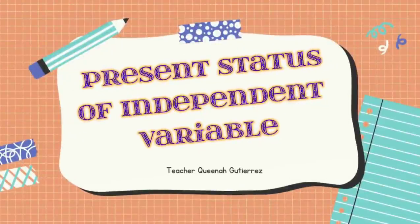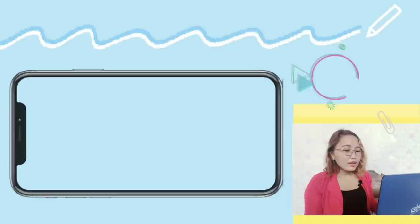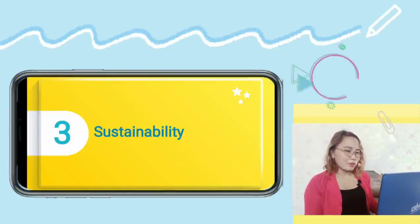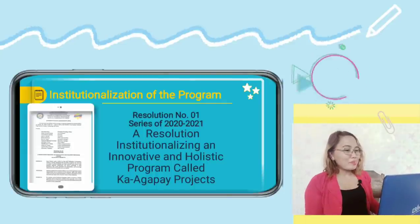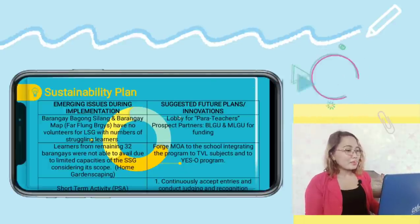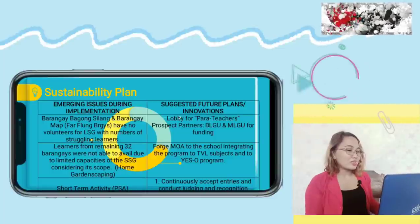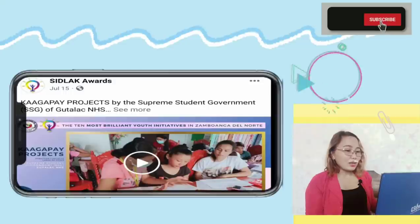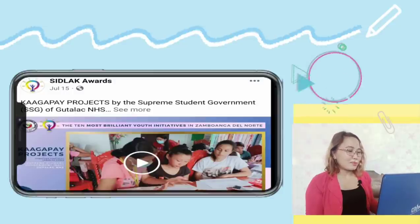Lastly, present the status of your independent variable — the action, the intervention, the initiative, or the program you are researching into. Give only the highlights if possible. Since we already conducted research and based on the recommendations, we came up with a sustainability plan. We made Resolution Number 01 Series of 2020-2021, re-institutionalizing the Kaagapay Project. Along with the implementation, the team received a SIDLAC Award as one of the top 10 youth brilliant initiatives in the province of Zamboanga del Norte last July 2021.